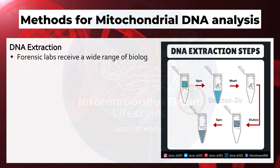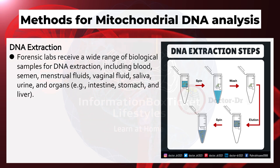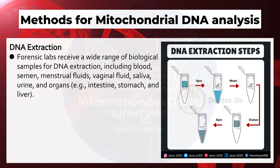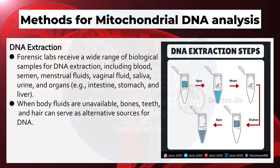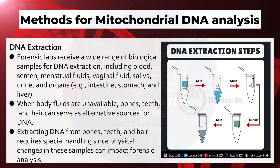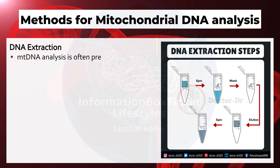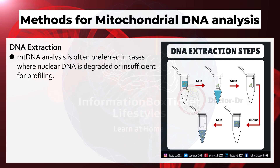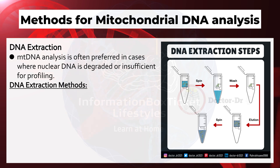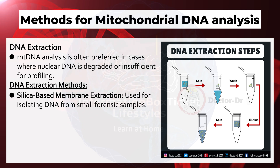Forensic labs receive a wide range of biological samples for DNA extraction, including blood, semen, menstrual fluids, vaginal fluid, saliva, urine, and organs such as the intestine, stomach, and liver. When body fluids are unavailable, bones, teeth, and hair can serve as alternative sources. Extracting DNA from bones, teeth, and hair requires special handling since physical changes in these samples can impact forensic analysis. Mitochondrial DNA analysis is often preferred when nuclear DNA is degraded or insufficient for profiling.